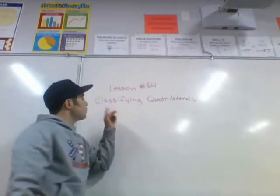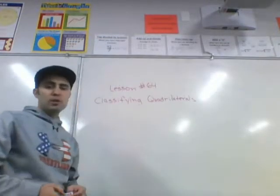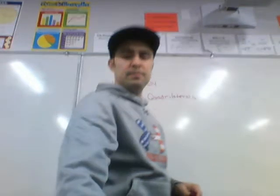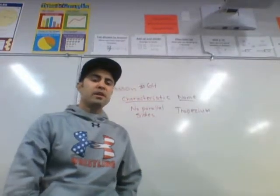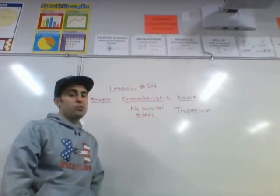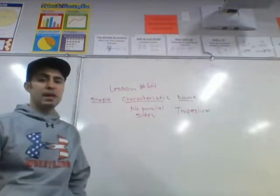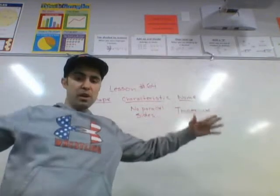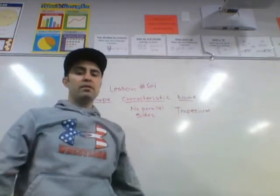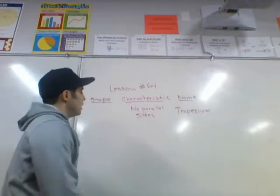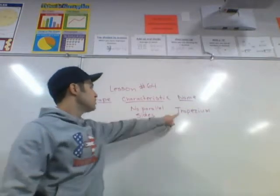For lesson 64, we're going to classify quadrilaterals. A quadrilateral just means a shape with four sides. There are a lot of different types of shapes that can fall into that umbrella of quadrilaterals. One type is the trapezium.